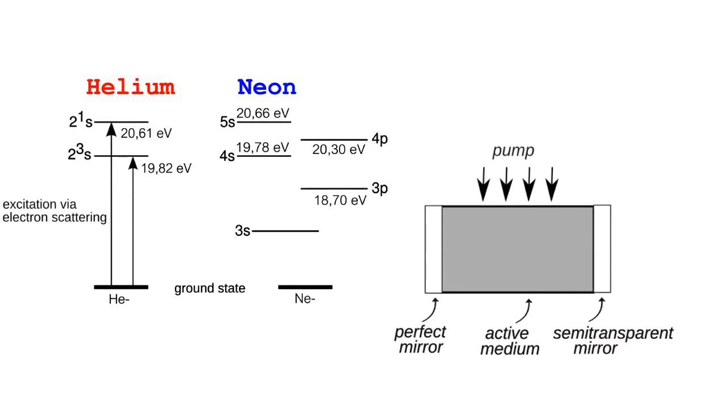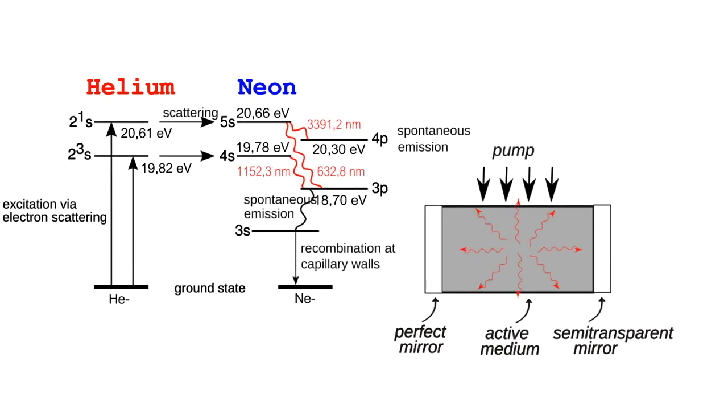These in turn collide again with neon atoms and excite them into excited 4s and 5s states for population inversion. A population inversion means that more electrons are in an energetically higher level than in an energetically low level. This is absolutely necessary for laser operation and can only be achieved by supplying energy in the form of pumping.